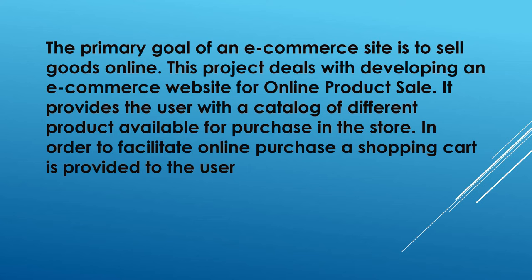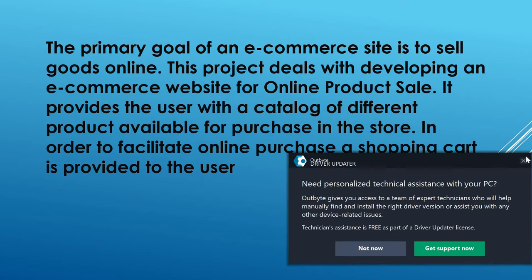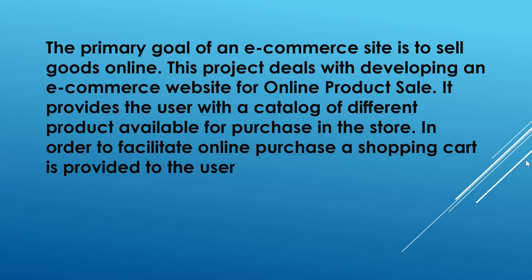The primary goals of an e-commerce application site is to sell goods online. These are the words you have to use: the primary goal of the e-commerce application is to sell goods. The project deals with developing an e-commerce website for online product sales. It provides the user with a catalog of different products available for purchase in the store, in order to facilitate online purchase. A shopping cart is provided to the user. If you go to Myntra or Amazon, you will have a catalog of products where you can filter.